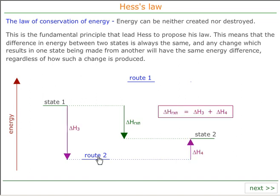So route 2, in this case, delta H3 plus delta H4 will exactly equal delta H reaction as well. This is all Hess's Law tells us — it doesn't matter where we go. This is really useful because we can go via hypothetical places, and we know that provided we go from state 1 to state 2, the energy change will be correct.